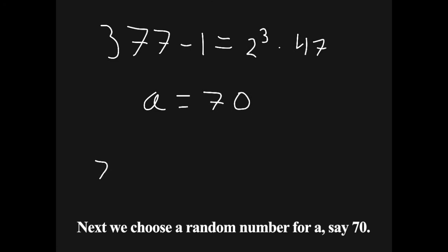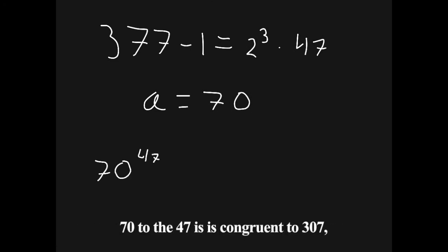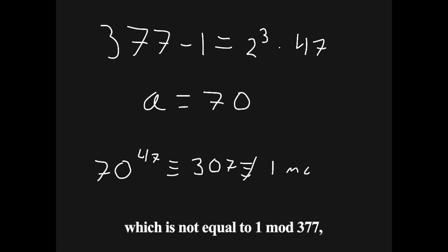Next, we choose a random number for a, say 70. 70 to the 47 is congruent to 307, which is not equal to 1 mod 377. So we continue to the second test to see if 377 base 70 passes.